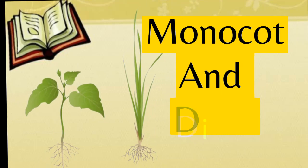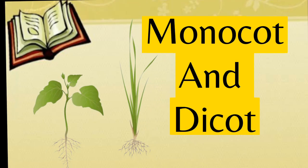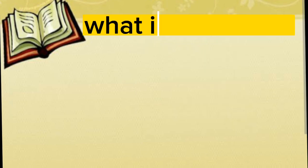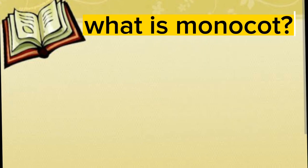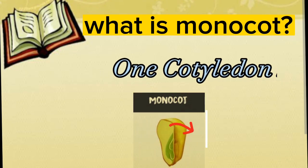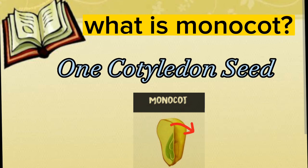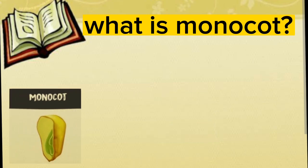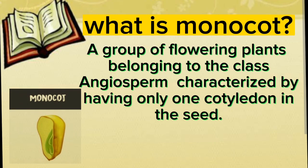Welcome to the channel. Today we are going to discuss monocot and dicot with examples. What is monocot? Mono means one — it means one cotyledon seed. It is a group of flowering plants belonging to the class angiosperm.